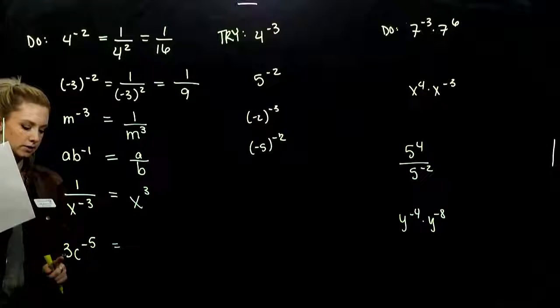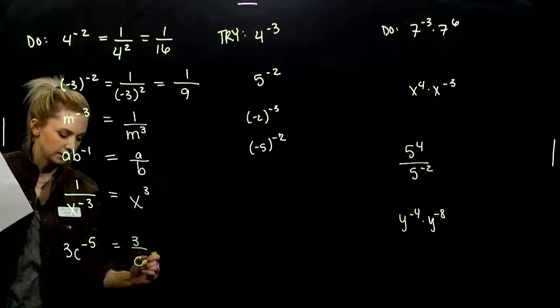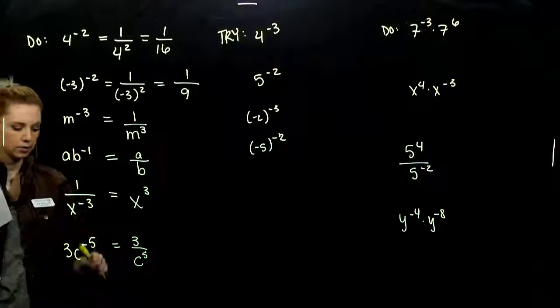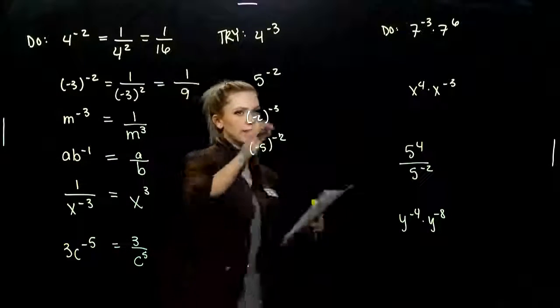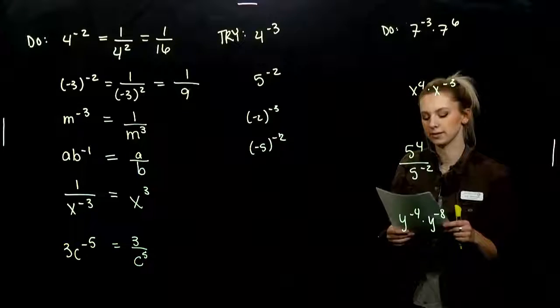And last. What isn't going to move? 3. He'll stay up top. And C raised to the fifth will be down below now. Take the reciprocal with a positive power. So go ahead and take the next four examples. Simplify them if you can. Write with positive exponents.